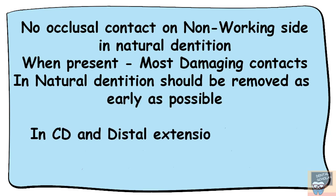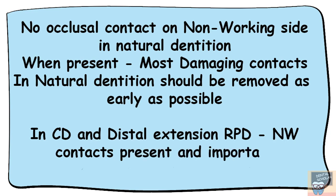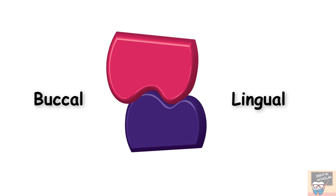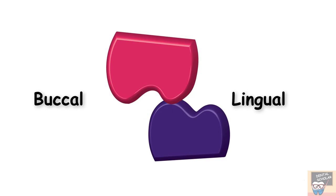In a complete denture or in a distal extension RPD case, the non-working contacts are present, are important, and are often called the balancing contacts. The mandibular tooth in non-working movement moves lingually with respect to the maxillary tooth and the opposing supporting cusps are in contact — that is, the upper palatal contacts the lower buccal cusp.